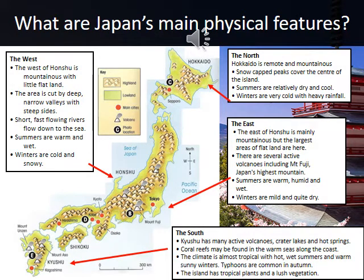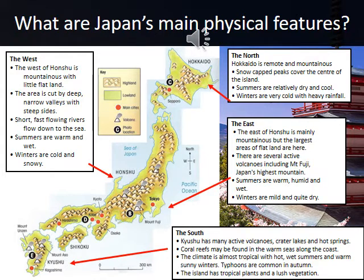Here's a little bit more about the physical geography of the main islands. Even more than here in the UK, the climate changes so much within one country — it's amazing. We've got snow-capped mountains on the north island of Hokkaido down to hot springs and tropical forests in the south on Kyushu. Take your focus to the main island of Honshu — notice how mountainous it is. The whole centre of the island is upland and the coastal areas are the only lowland or flat areas to be found.